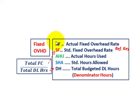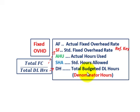Looking at our reference key: AF is our actual fixed overhead rate, SF in red is the standard fixed overhead rate, AHU is the actual hours used — and this fixed overhead rate was based on direct labor hours. SHA in blue is the standard hours allowed, and DH is the total budgeted direct labor hours, or denominator hours. Those denominator hours fit into our fixed overhead rate calculations — you take your total fixed cost and divide by total direct labor hours to get these rates.